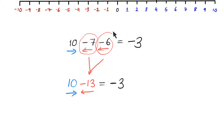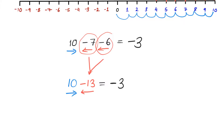You can visualise this on the number line. The 10 is moving 10 steps to the right: 1, 2, 3, 4, 5, 6, 7, 8, 9, 10. But then it moves 7 steps to the left: 1, 2, 3, 4, 5, 6, 7. And then another 6 steps to the left: 1, 2, 3, 4, 5, 6. And as you can see, we clearly arrive at minus 3, which is the answer we got.